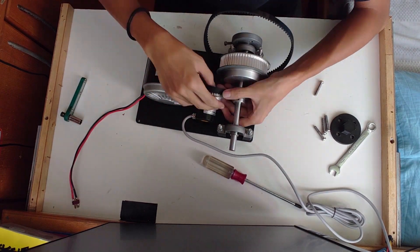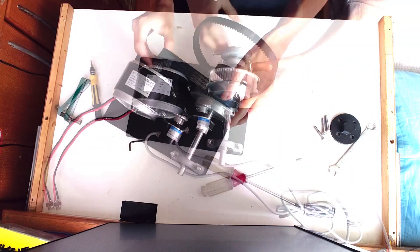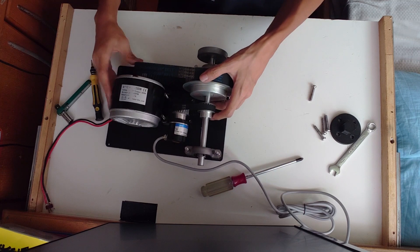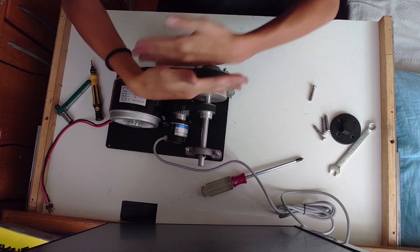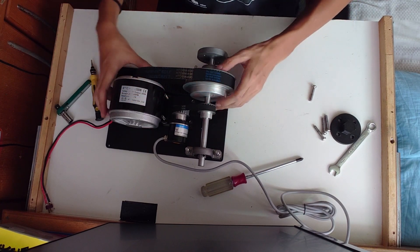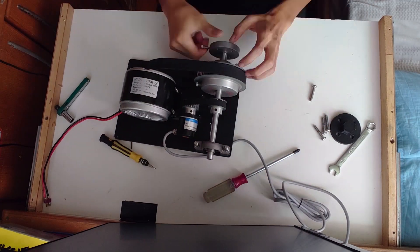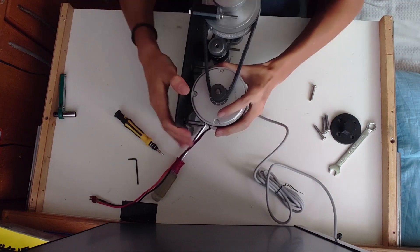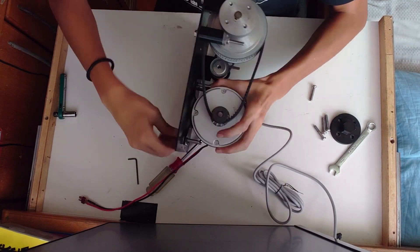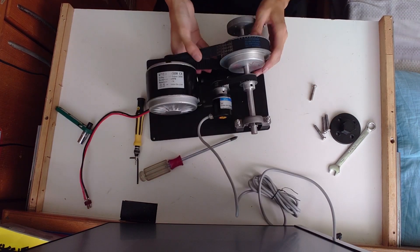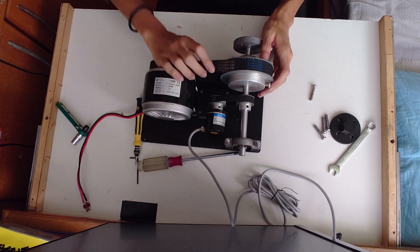Then put the timing pulley onto the encoder. Then we can put on the belt and make sure the timing pulleys are collinear to each other. Then we can tension the belt. Make sure everything is nice and tight.